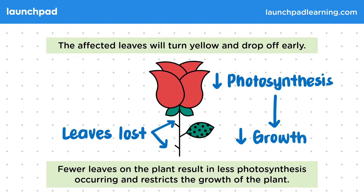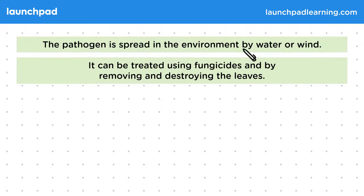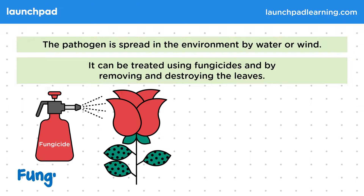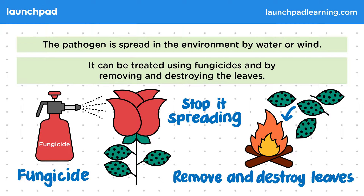How does this disease spread? The pathogen is spread in the environment by water or wind. It can be treated using fungicides — chemicals that kill fungi — and by removing and destroying the infected leaves. For the exam, you need to know that this disease is spread by water or wind, and that treating it with fungicide or removing and destroying infected leaves will treat it.